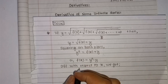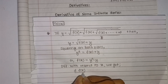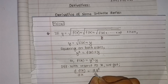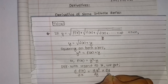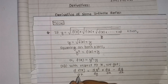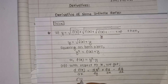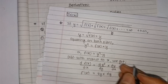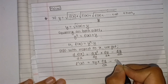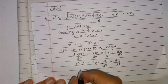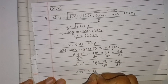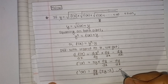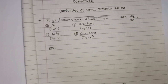Now differentiating f(x), d f(x) upon dx is equal to d(y square) upon dx, using the power rule and log. Then dy upon dx — taking dy/dx common — is equal to dy/dx times (2y minus 1). So f'(x) is equal to dy/dx times (2y minus 1).